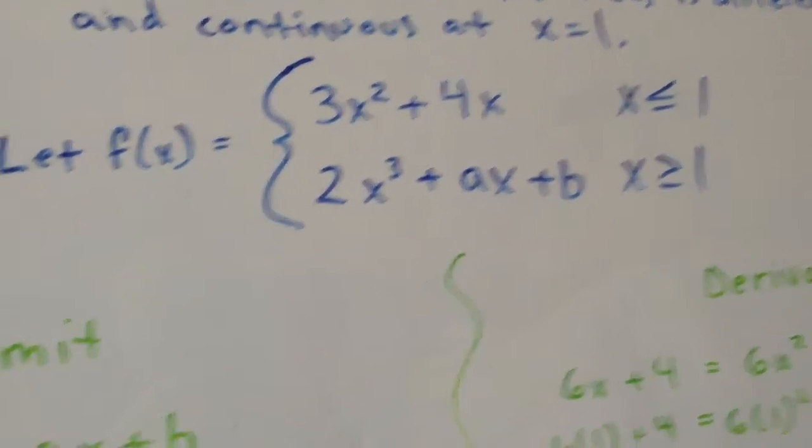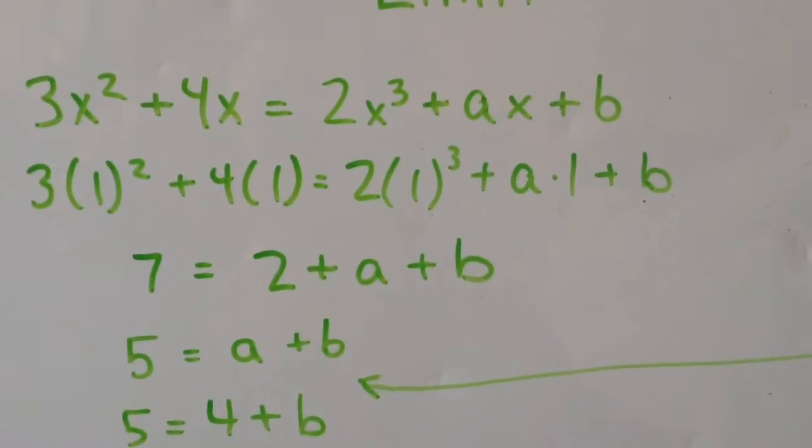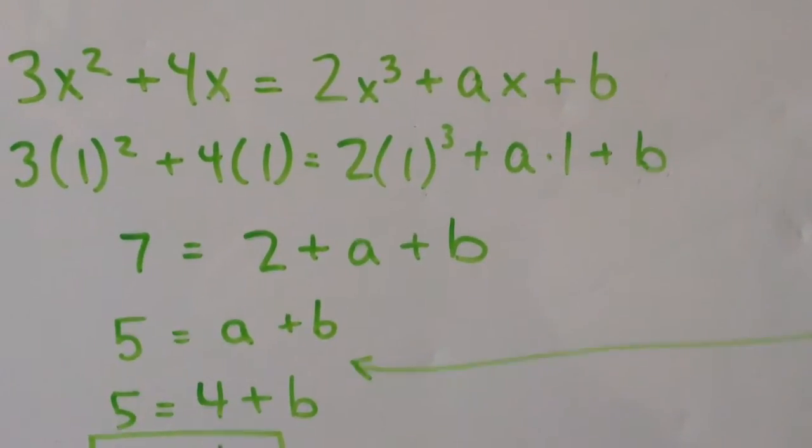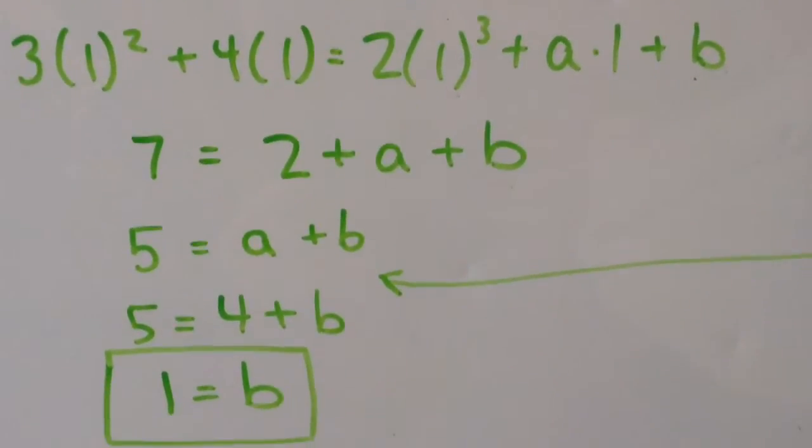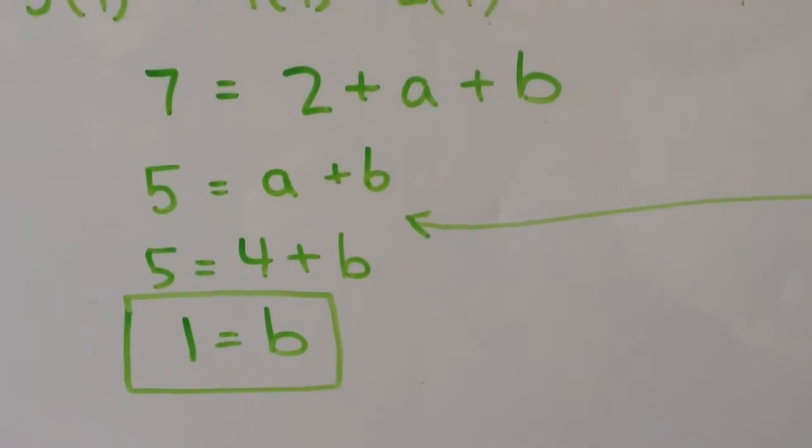I first set the two equations equal to each other, and then I plugged in 1 for x and simplified to 7 equals 2 plus a plus b, and simplified that down to a plus b equals 5.